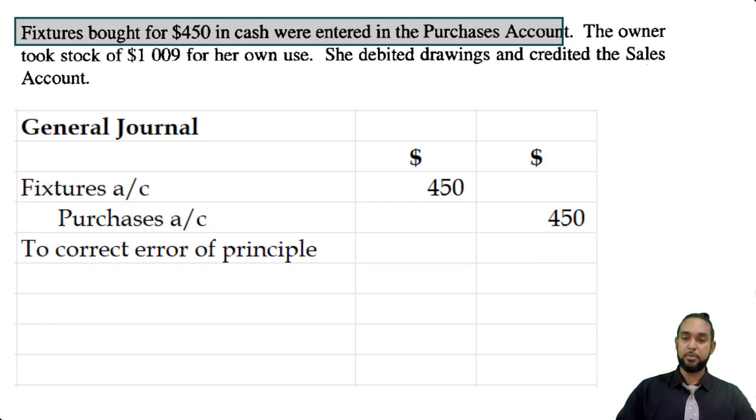So the credit entries are entered second and they are indented relative to the debit entries. Now, this is an error of principle. Now, they said not to put narratives, but I'm putting it for practice. An error of principle is where the wrong class of account is used. So it was supposed to go in the assets account. So we put it in the expense account. So that's an error of principle.